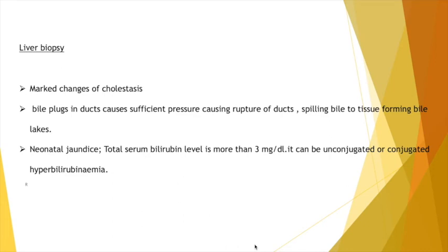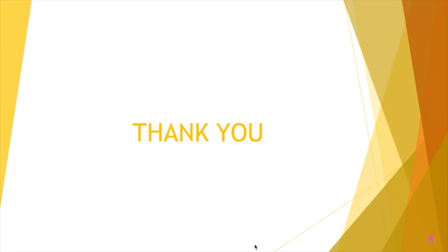We have finished discussing the liver biopsy of extrahepatic cholestasis. Next is neonatal jaundice, which occurs when the total serum bilirubin level is more than 3 mg/dL; it can be conjugated or unconjugated hyperbilirubinemia. If you have any doubts, please mention them in the comment box. Please like, share, and subscribe. Thank you.